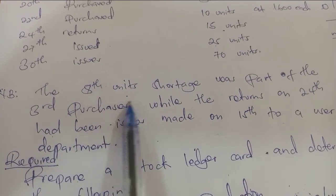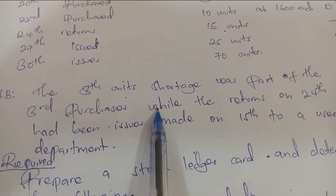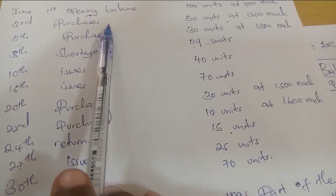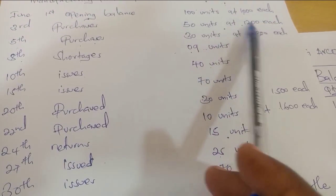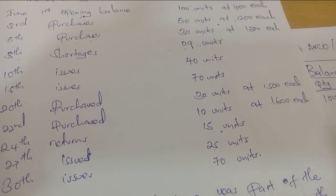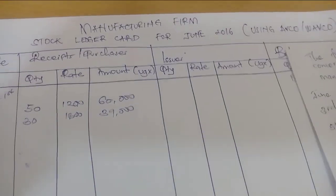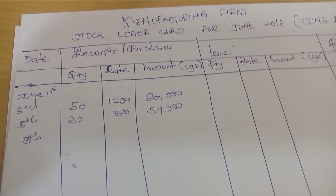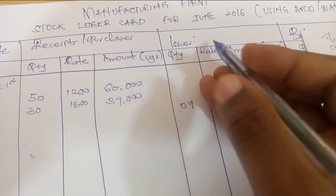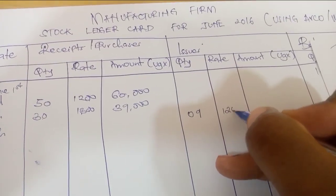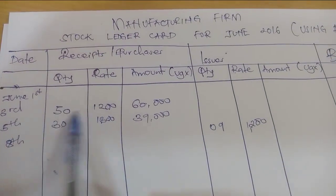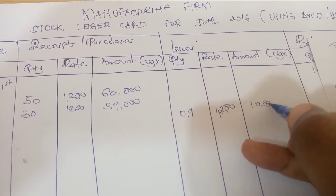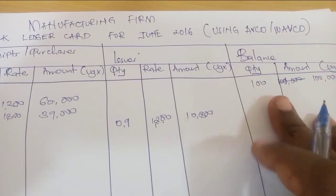On the 8th there were shortages of 9 units. The additional information states the shortage was part of the 3rd purchases, so we use the price from that purchase. We consider shortages as issues, so 9 units are placed under issues at 1,200 — since they were part of the 3rd purchases. 9 times 1,200 equals 10,800.